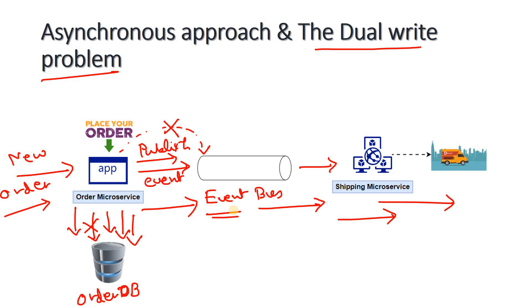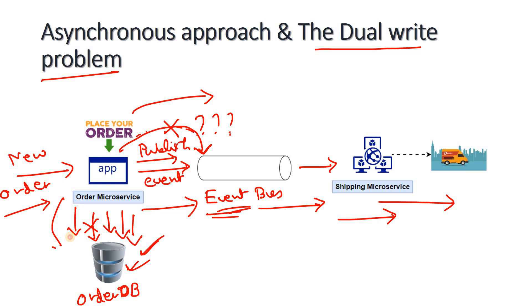We cannot easily roll back to fix this, because while database-level rollback is possible, Kafka mostly does not support rollback or commit mechanisms. Two separate transactions are happening — one in the database and one in Kafka — and they cannot be simultaneously committed or rolled back because they are different systems. So parallel rollback or parallel commit is not possible, and this inconsistency is the core of the dual write problem.